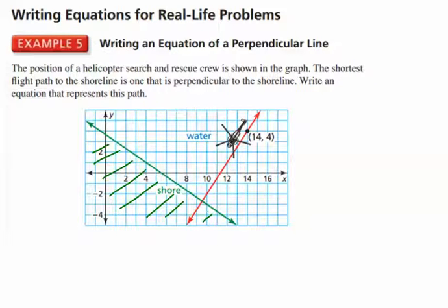And the helicopter wants to get to the shore in the shortest path. We know from geometry, which you guys may not have learned just yet, but there is a theorem in geometry that says the shortest distance between a line and a point is a line segment from the point drawn perpendicular to the line. So what we really want is we want the equation of this red line such that the red line is perpendicular to the green line.